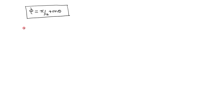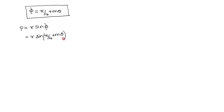Substituting this into the pedal equation P = R sin φ: P = R sin(π/4 + Mθ). The pedal equation should have only P and R as variables, but here we also have θ, so we need to eliminate it.